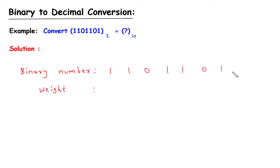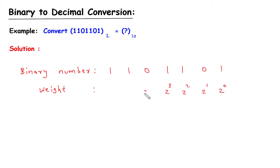So here the weight of this digit is 2 raise to the power 0. Here it is 2 raise to the power 1, here it is 2 raise to the power 2, 2 raise to the power 3, 2 raise to the power 4, 2 raise to the power 5, and 2 raise to the power 6.